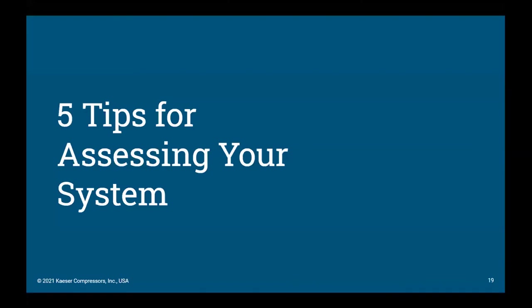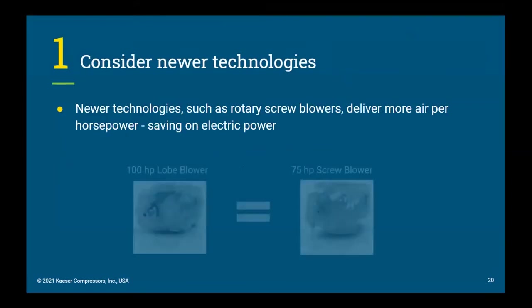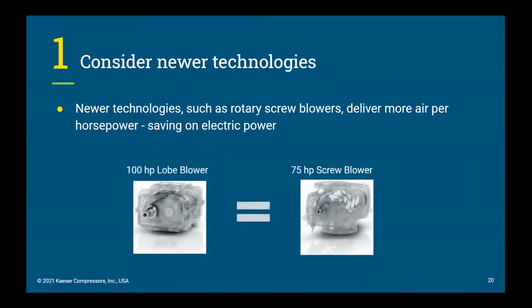I'm going to hand it off to Travis Sneed, who's going to talk to us about tips for putting all this into practice. Thank you, Stephen. My name is Travis Sneed and I'm the district manager for water and wastewater aeration blowers. We're going to walk through five tips and tricks to assess your current blower system. Step one is to always consider newer technologies. As George noted, rotary screw blowers will usually be one nameplate horsepower smaller than traditional lobe and multi-stage centrifugal technologies, making installation a breeze since you are able to reuse the existing electrical infrastructure.